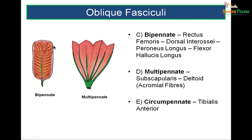Bipennate: fibers come from both sides inserting into a long central tendon — found in rectus femoris and other muscles. Multipennate: the most powerfully packed arrangement, with fibers going to tendinous intersections — the classic example being the large deltoid muscle of the shoulder, especially the acromial fibers.